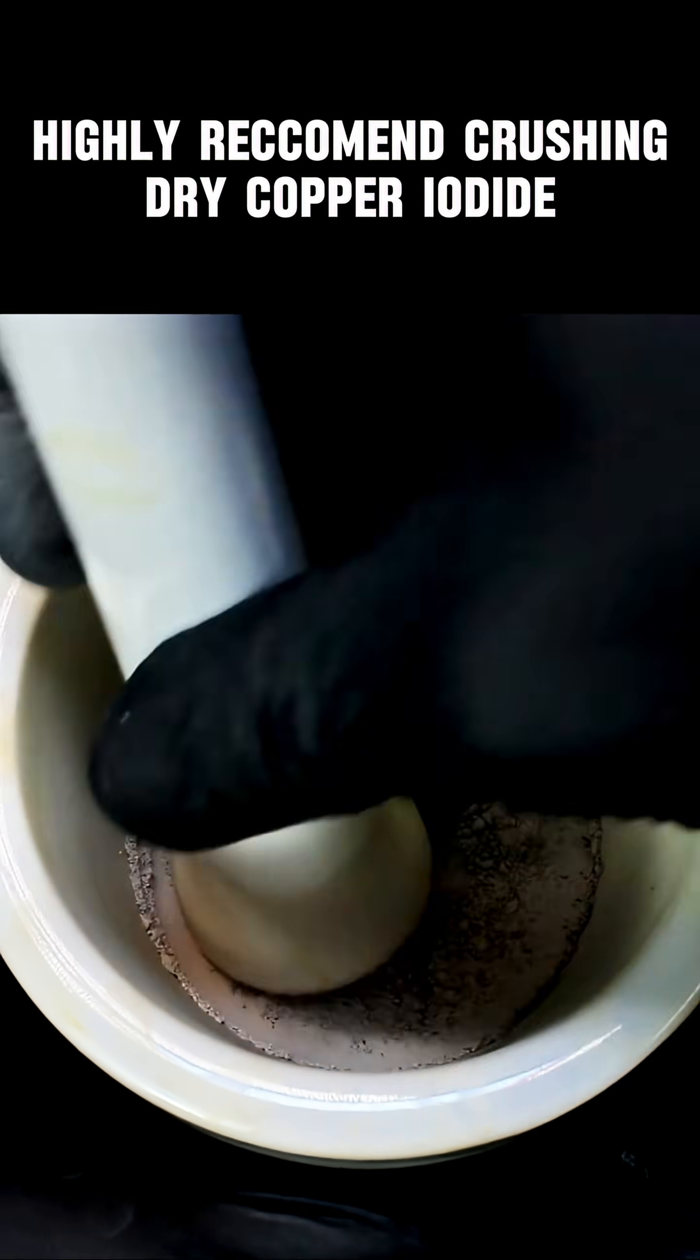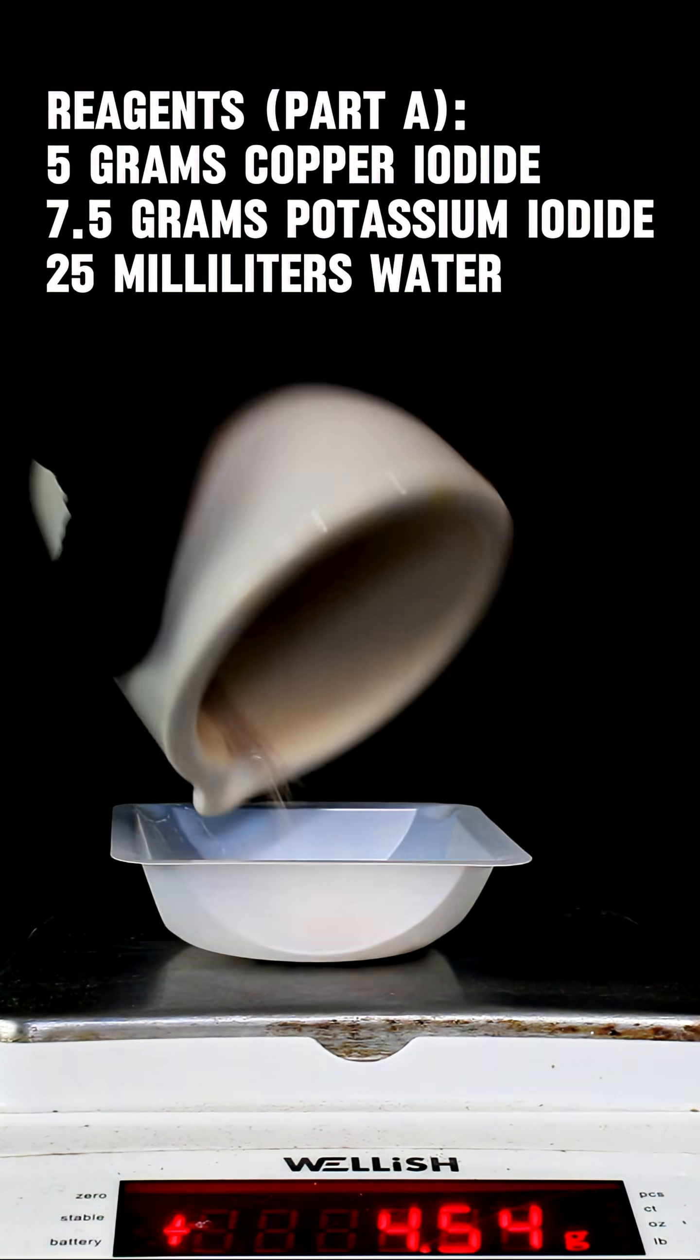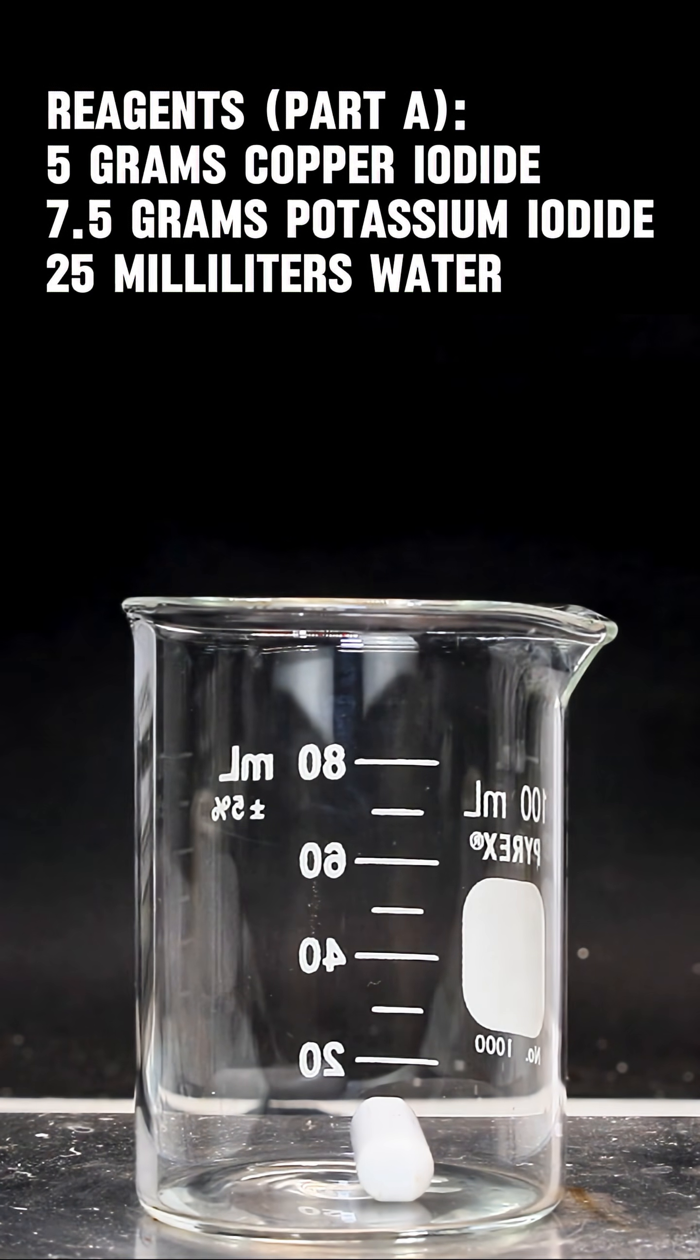Once you've got copper iodide, the next step is to combine it with excess potassium iodide to form a soluble copper iodide complex.